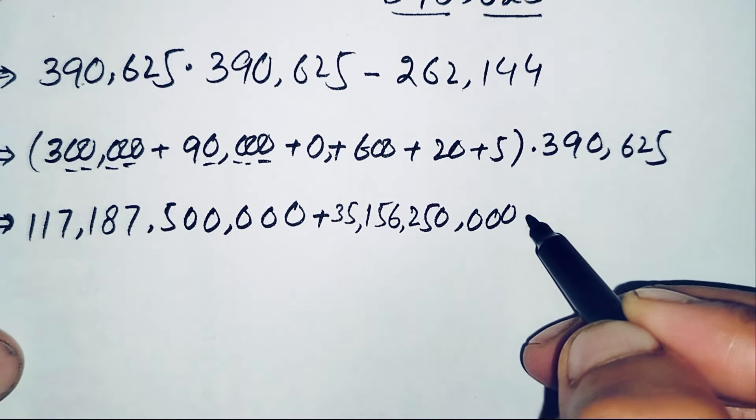Now we subtract 262,144 from 152,587,890,625. Starting from the ones: 5-4=1, 2-4 requires borrowing so 12-4=8, 5-1=4, then 0-2 requires borrowing so 10-2=8, 8 remains 8, 8-6=2, 8-2=6. The remaining leading digits stay the same: 152,587. So the final answer is 152,587,628,481.